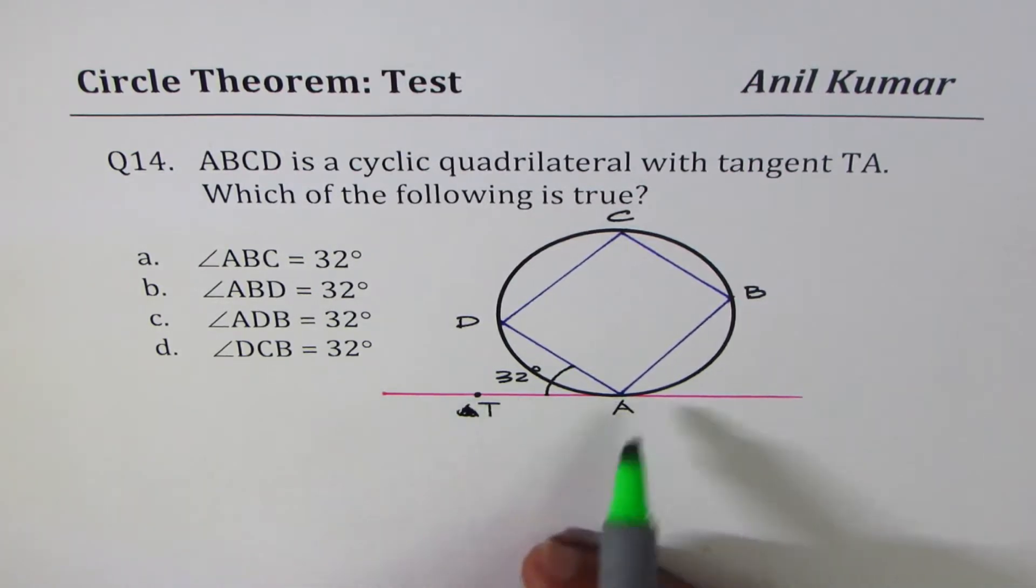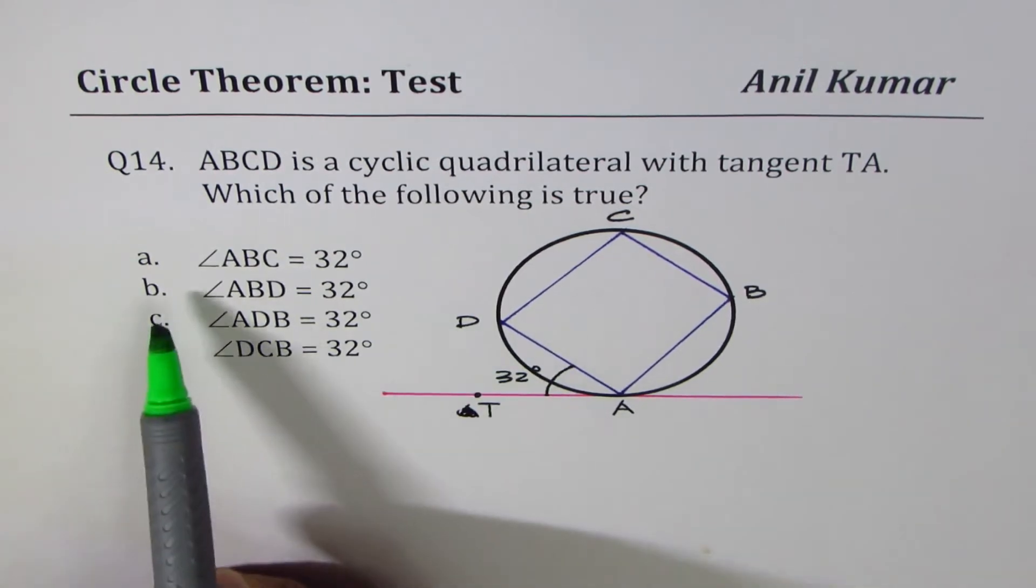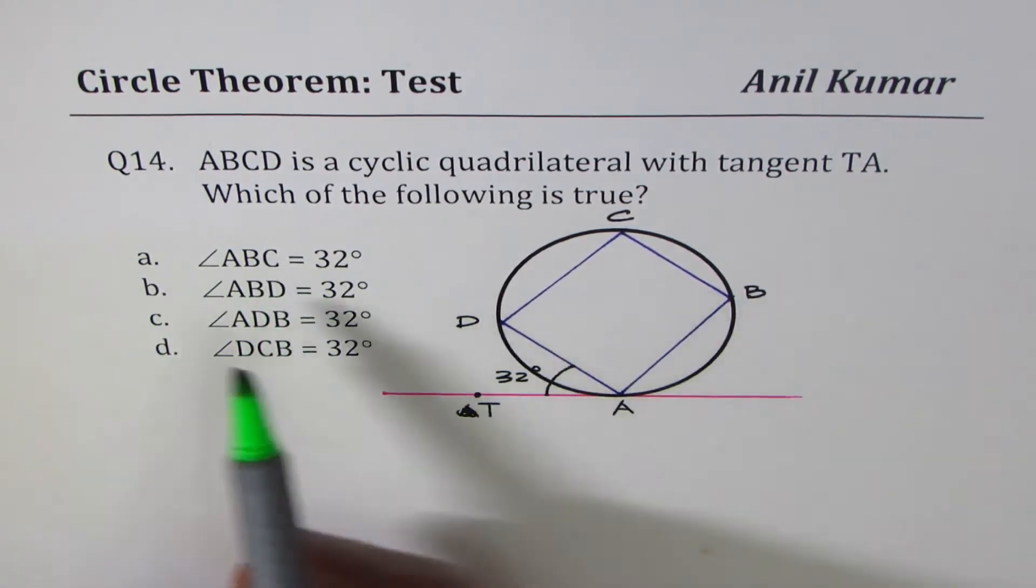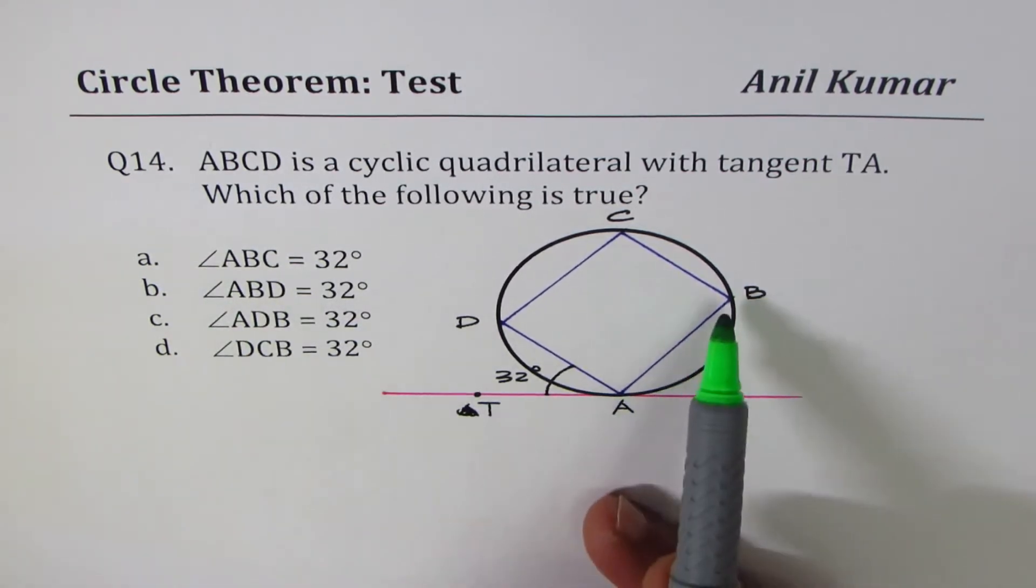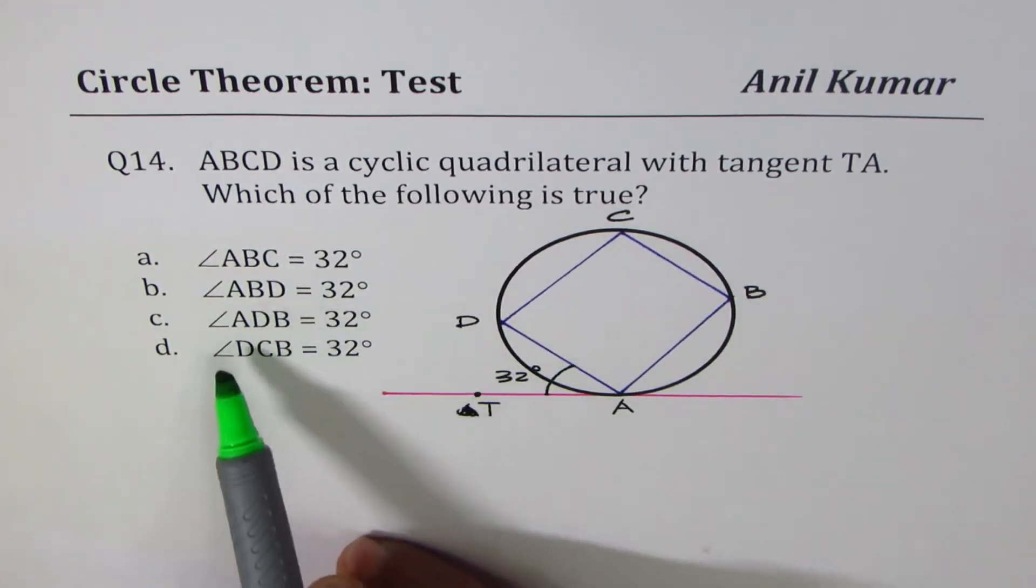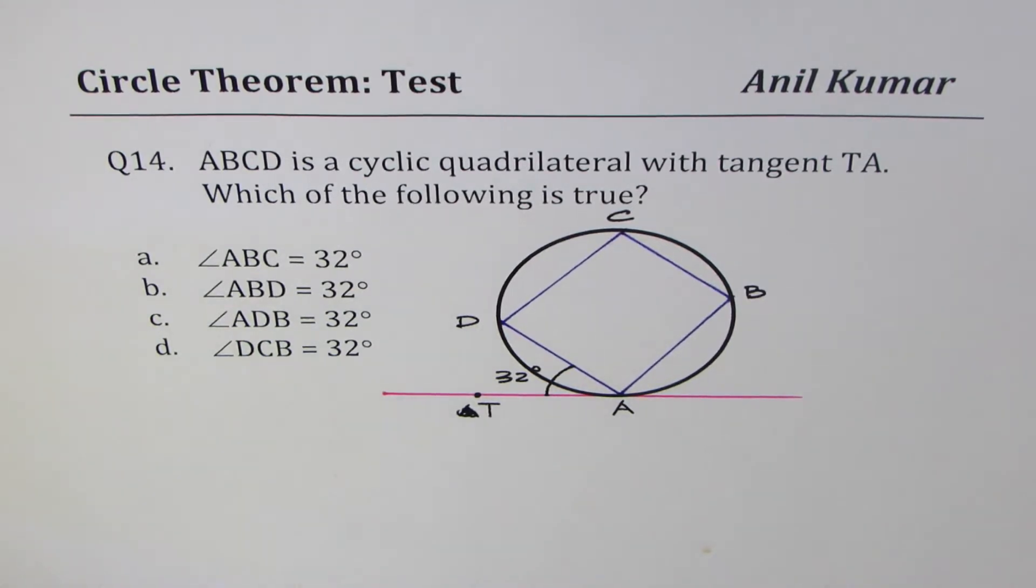Which tangent TA makes with the chord DA. Now you have to find which angle is 32 degrees. Angle ABC, angle ABD, ADB, or angle DCB. You can pause the video, answer the question, and then look into my suggestions.